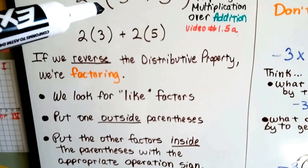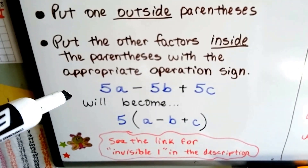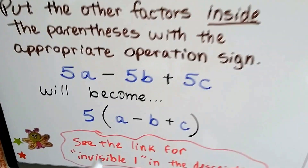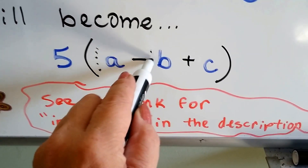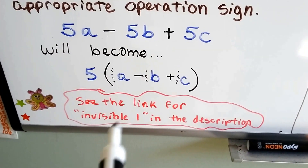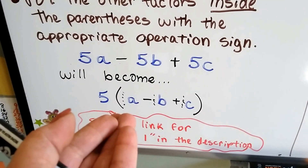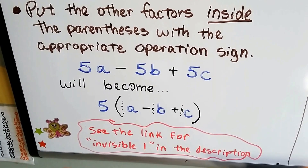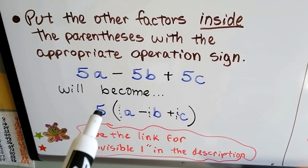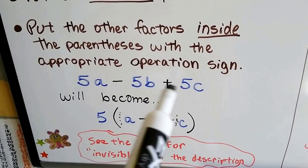We put the other factors inside the parenthesis with the appropriate sign. So if we have 5a minus 5b plus 5c, it becomes 5 with a minus b plus c inside the parenthesis. Do you remember from my previous videos there's an invisible one in front of all of these variables? We don't write it because we can see there's one a — we don't have to write the coefficient. By writing it with the 5 on the outside, because they all have a 5, we can multiply it to a minus b plus c to get 5a minus 5b plus 5c.